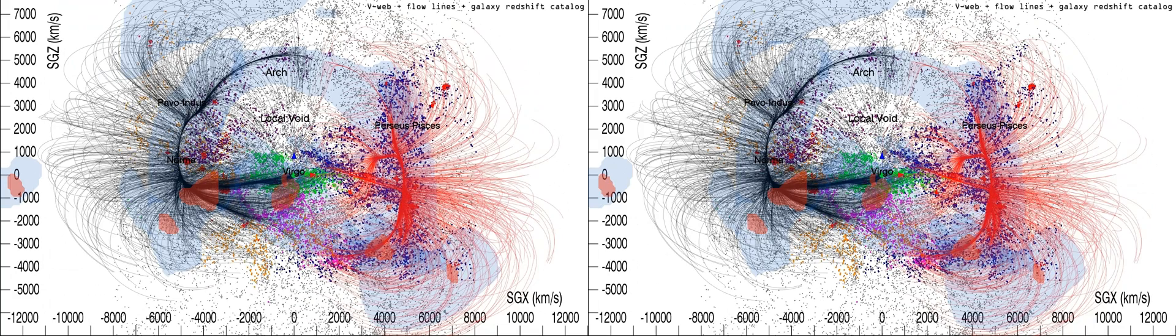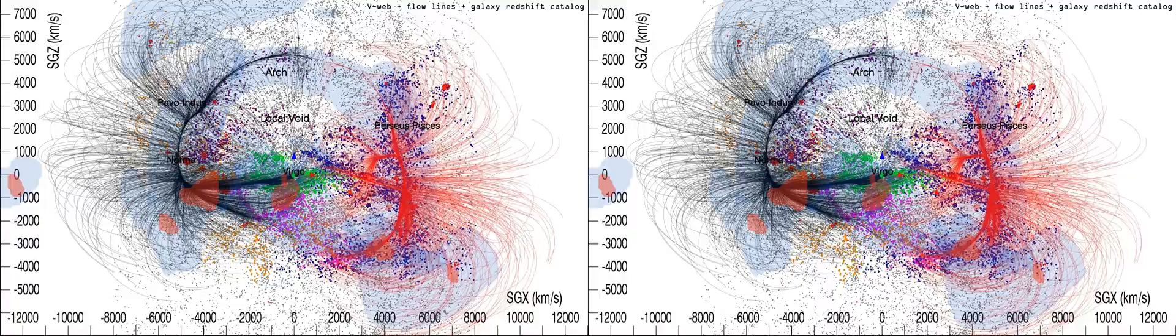Galaxies from a redshift catalogue are superimposed with colours associating them with separate, major features.